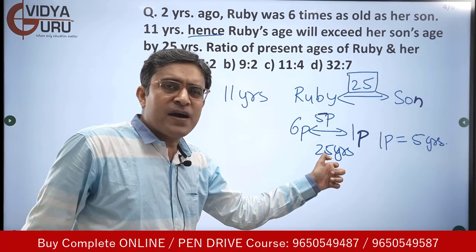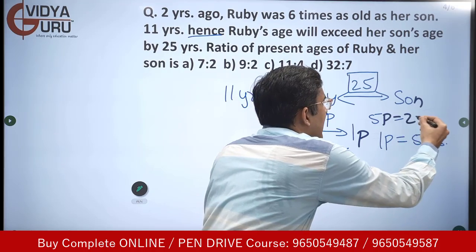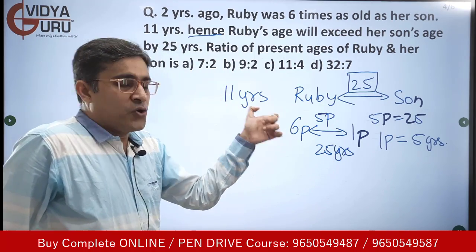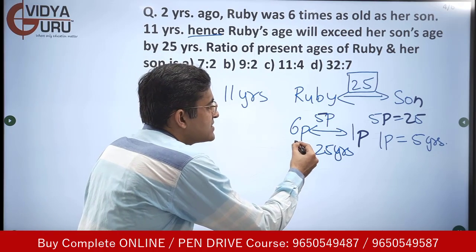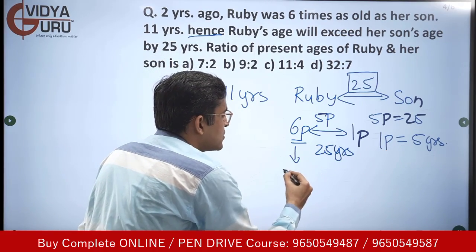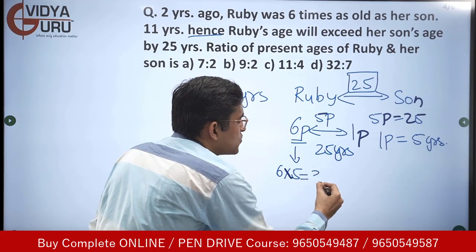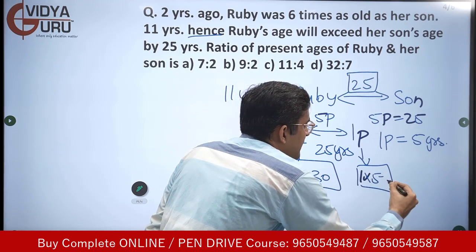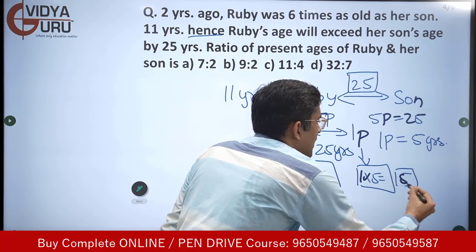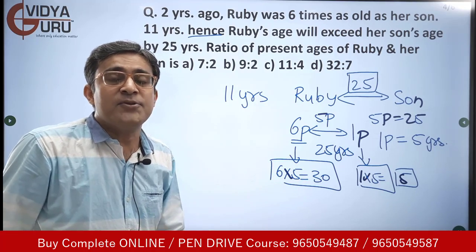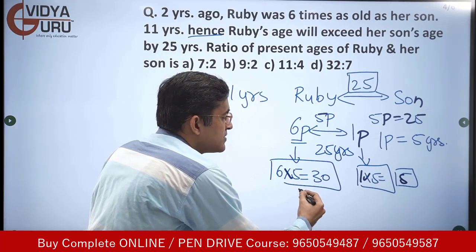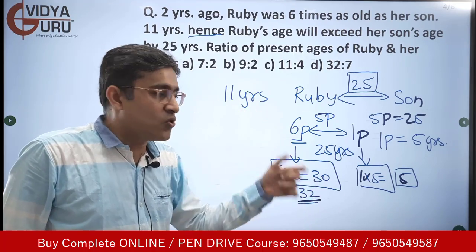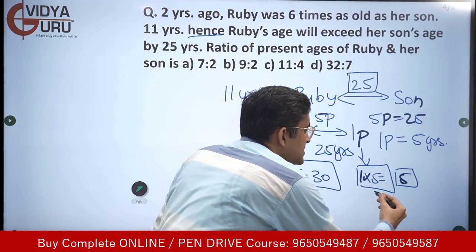Two years ago, Ruby's age was six parts — six into five equals thirty years. Her son's age was one part — one into five equals five years. That was the status two years ago. So today, Ruby is thirty-two years old and her son is seven years old.